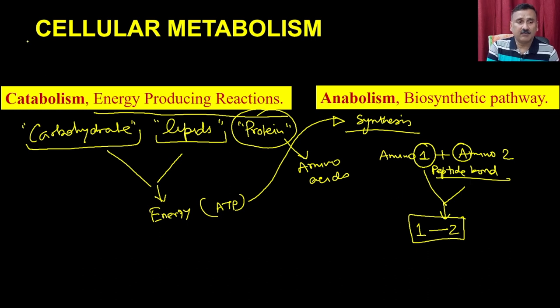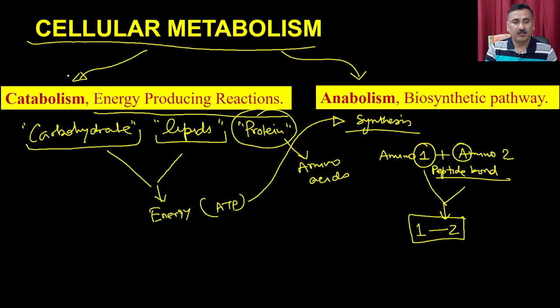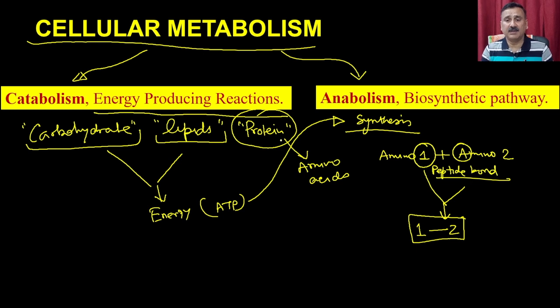Cellular metabolism is a summation of all reactions, whether catabolic or anabolic. Catabolic reactions are required for the production of energy, whereas anabolic reactions utilize this energy for biosynthesis. Once synthesis is done, it contributes to the growth of organisms or other functions — for example, producing gametes, giving nutrition to daughter cells, and so on. These two reactions are always coordinated and are responsible for the cellular health of the cell.